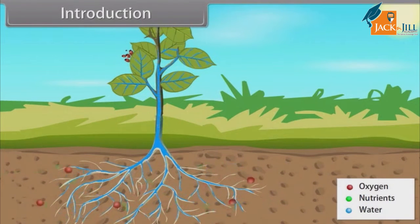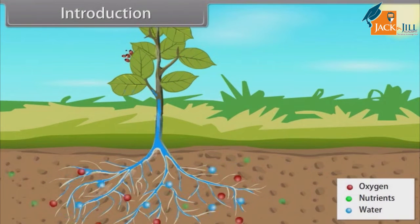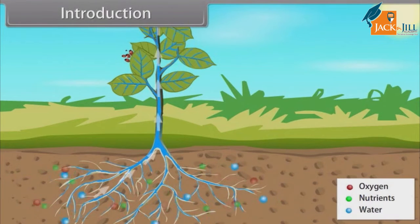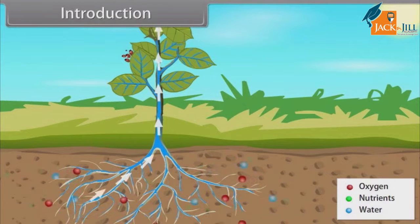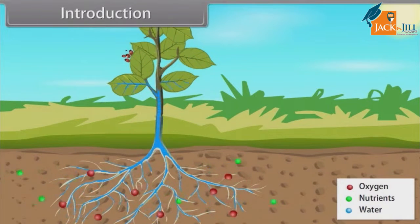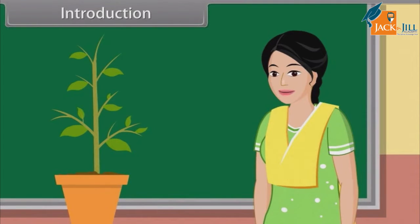One more thing I would like to tell you: there are five plant growth regulators. They are auxins, gibberellins, cytokinins, ethylene, and abscisic acid. Now it's time to learn about plant growth and development.